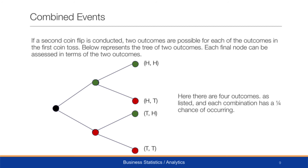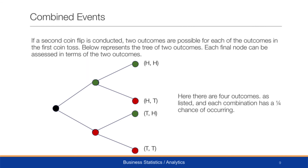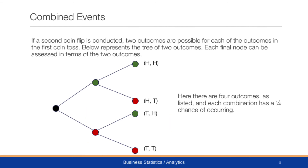If we were to flip a second coin, two outcomes are possible for each outcome of the first coin toss. We expand the tree to show this. For the top branch — where the first flip is tails (green node) — we have two options: green-green (tails-tails) and green-red (tails-heads). In the bottom branch — where the first flip is heads (red node) — we get red-green (heads-tails) and red-red (heads-heads). Thus we have four possible outcomes, and each combination has a one-quarter chance of occurring. All of these are known as combined events, and the trees help us visualize this much better.